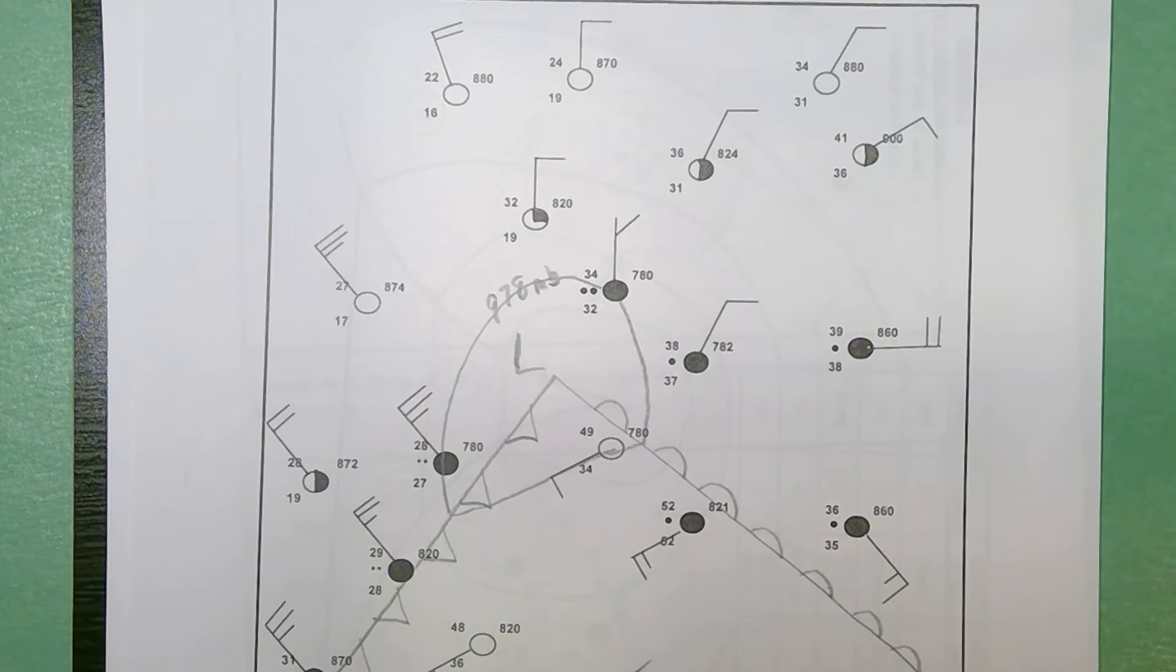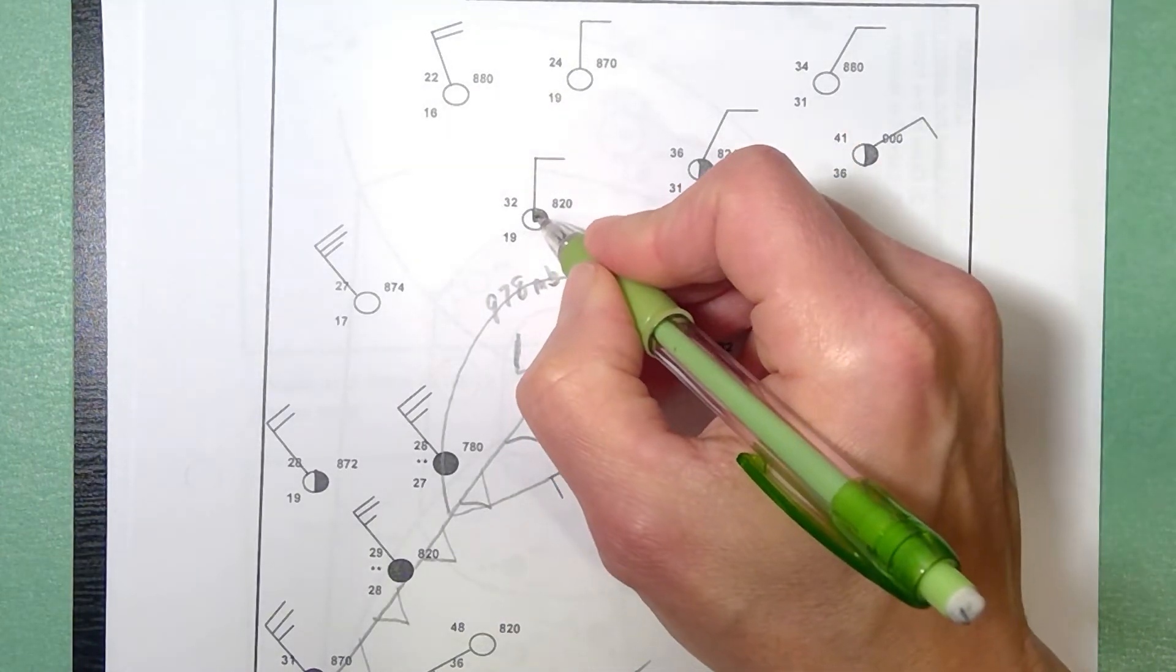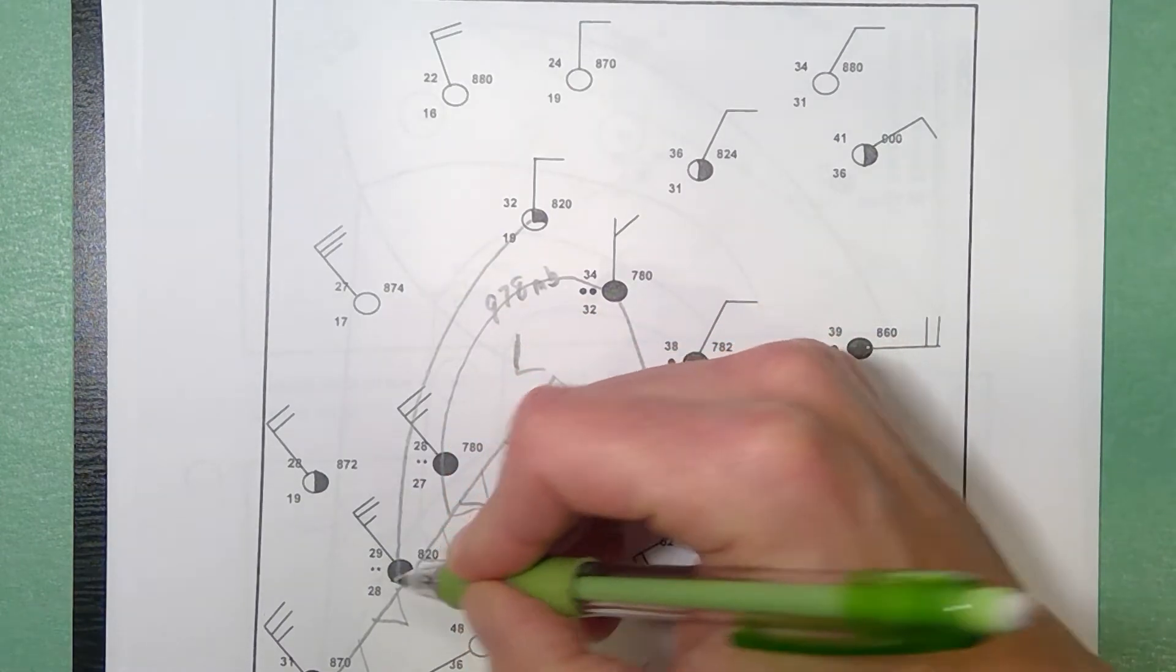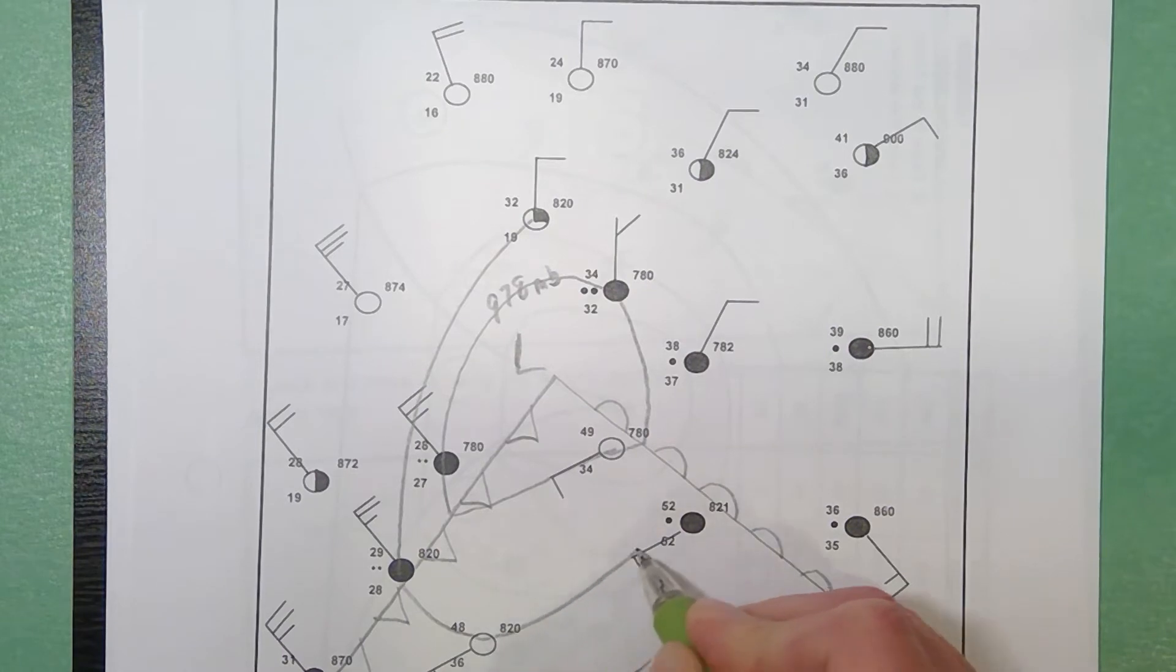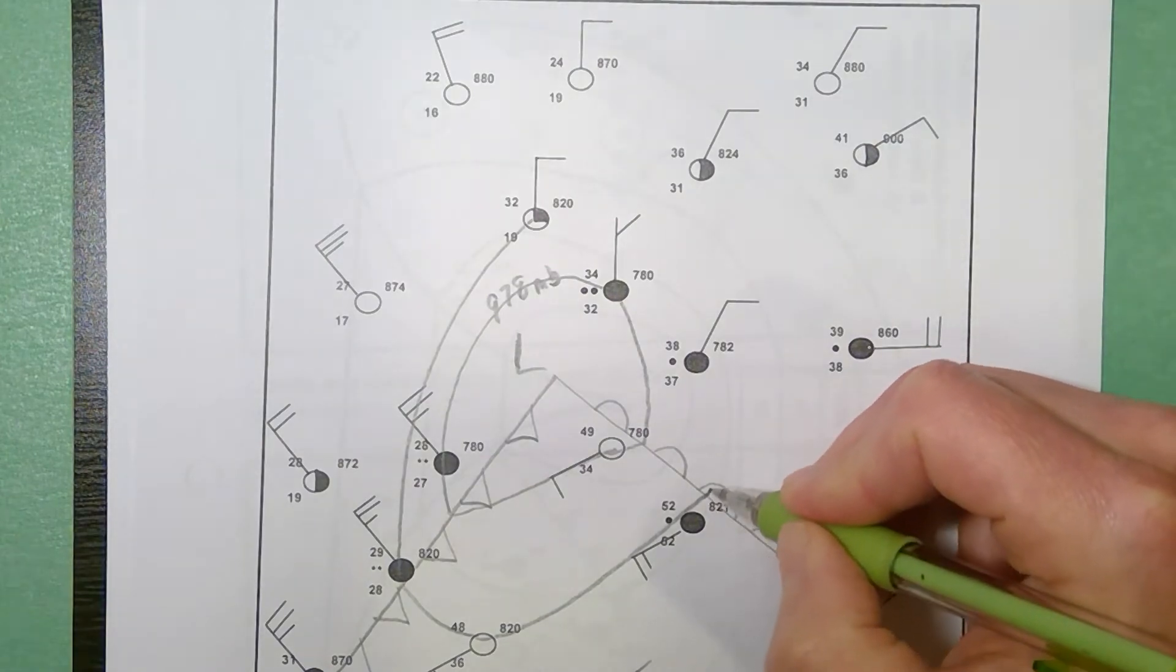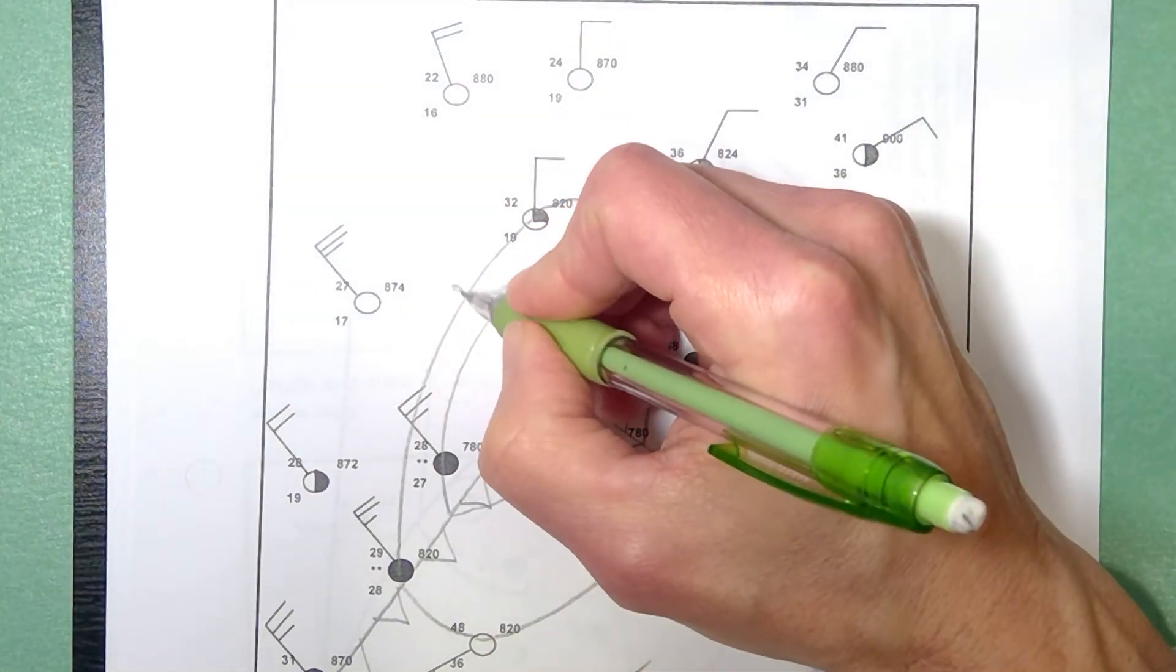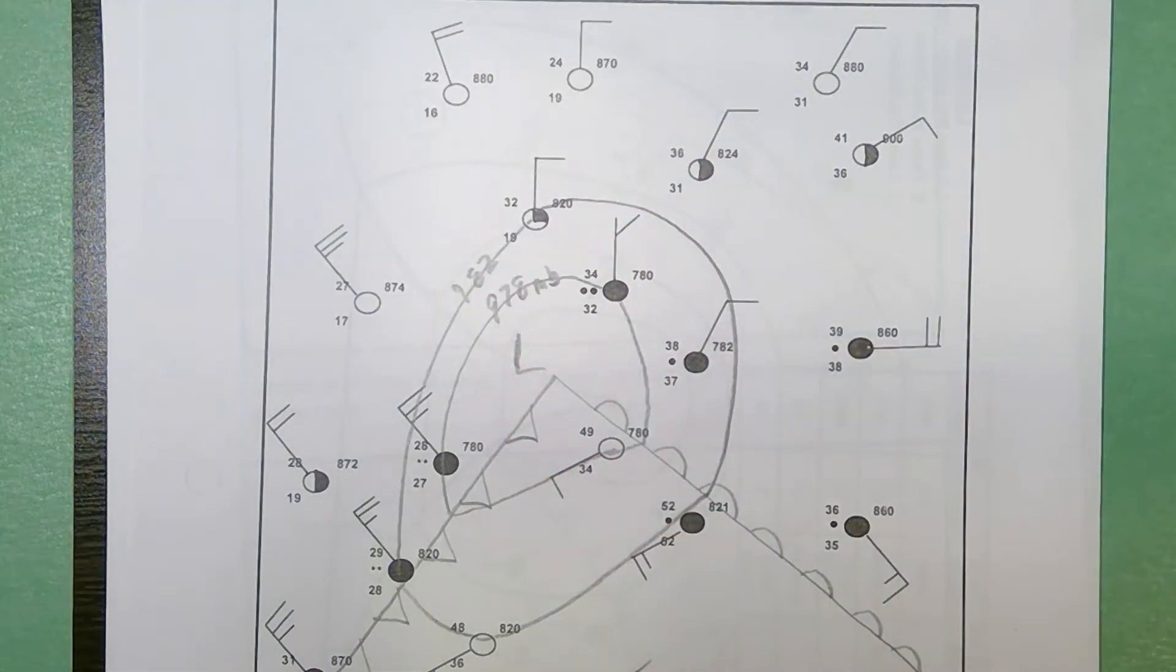I'm going to label this as 978 millibars, but it's recorded as 780 on the station model. 982—here's an 820, which represents 982. It's going to dip down, I'm going to come across, I'm going to hit this 820 here. I just missed the 821, and this has to go up and around, and there's my second isobar for 982 millibars.